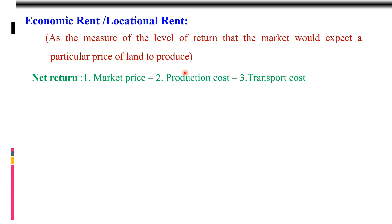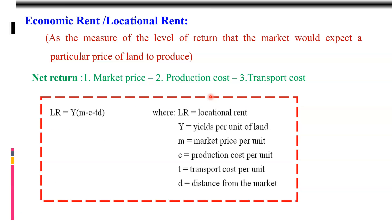By considering these three costs, he calculated the economic rent for that particular area. For that purpose, he used a very important formula: ELR = Y × (M − C − T×D). Where ELR equals location rent; Y stands for yield per unit of land; M stands for market price per unit of the agriculture commodity; C equals production cost per unit; T means transportation cost per unit; and D stands for distance from the market city.